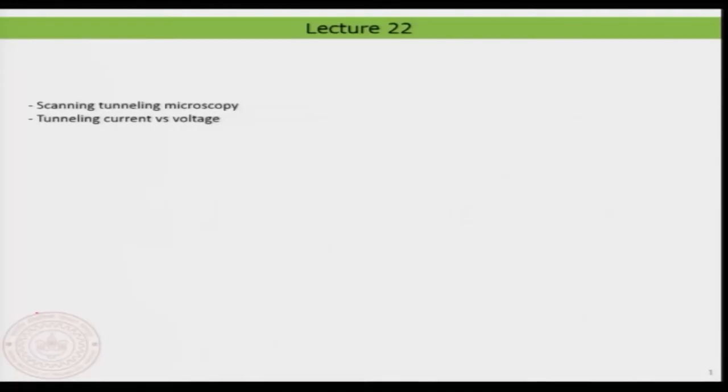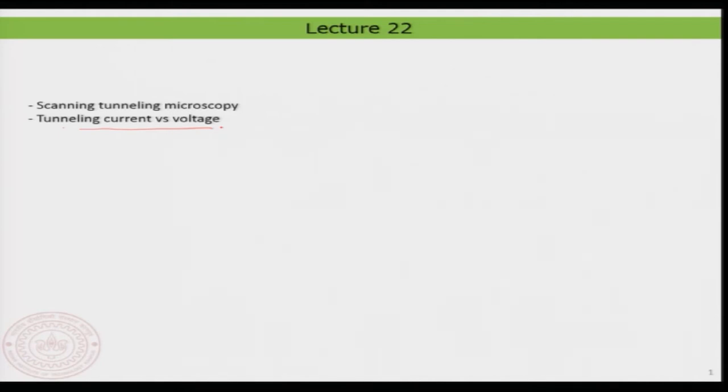Hello everyone, welcome back to lecture 22. In this lecture we will continue in the scanning tunneling microscopy part. Today we will mainly focus on the tunneling current versus voltage characteristics, because it is quite important to understand how the tunneling current actually varies as a function of voltage, since you will also use this current-voltage characteristic to understand the electronic structure of the material we are looking at.